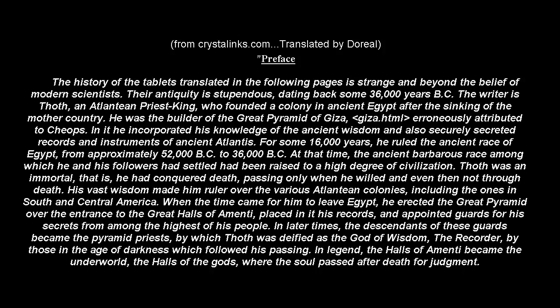The history of the tablets translated in the following pages is strange and beyond the belief of modern scientists. Their antiquity is stupendous, dating back some 36,000 years BC. The writer is Teth, an Atlantian priest-king, who founded a colony in ancient Egypt after the sinking of the mother country. He was the builder of the Great Pyramid of Gaza, erroneously attributed to Keops. In it he incorporated his knowledge of the ancient wisdom and securely secreted records and instruments of ancient Atlantis. For some 16,000 years he ruled the ancient race of Egypt, from approximately 52,000 BC to 36,000 BC.